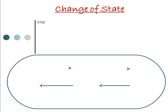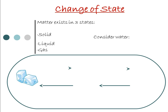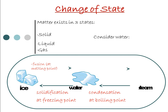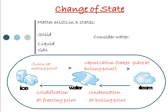Now, change of state. Matter exists in three states: solid, liquid, and gaseous state. For example, water in the form of solid is known as ice. Solid gets converted into liquid. Then this liquid water, through vaporization, is converted into steam. Condensation at boiling point converts steam back into water, and solidification at the freezing point converts water back into ice.